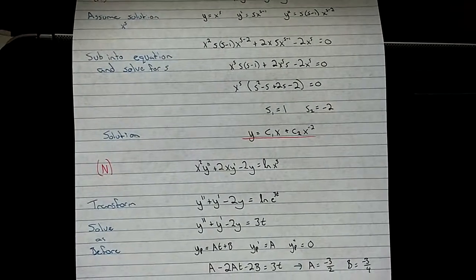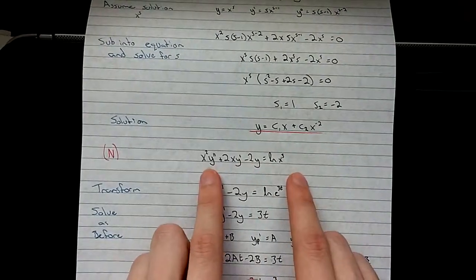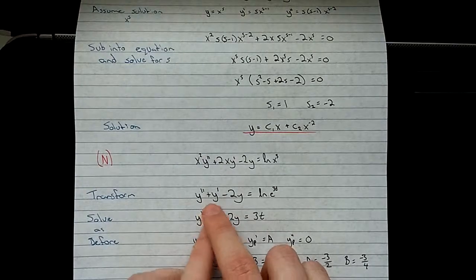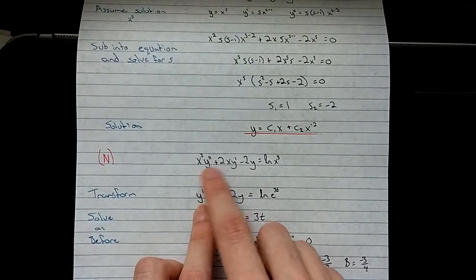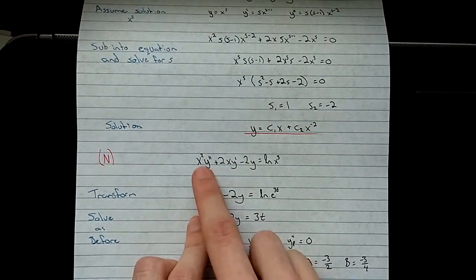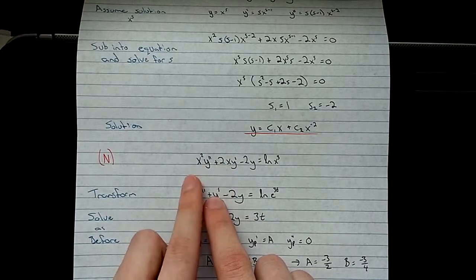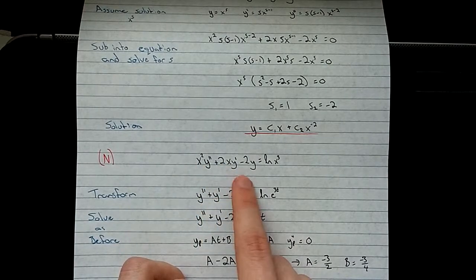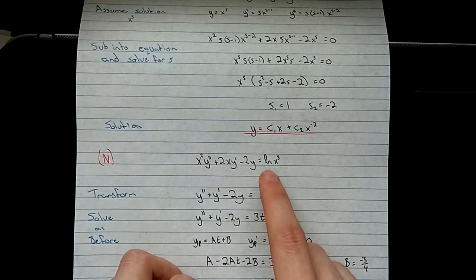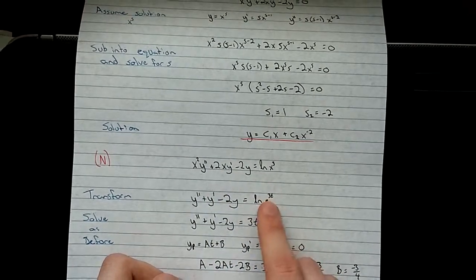For the non-homogeneous solution, this is just the original equation again. So we're going to do our transformation there. The x's have dropped away. Here, a is the same. Here, we have b minus a, so 2 minus 1 is 1. C is the same.